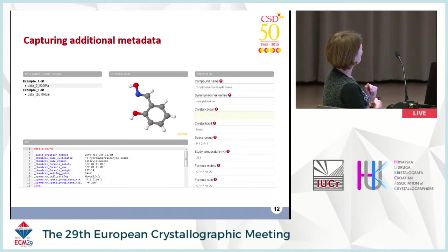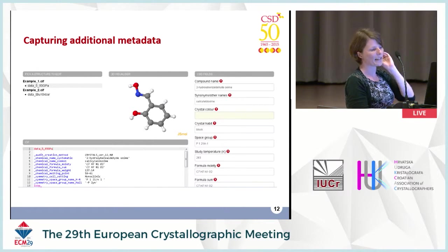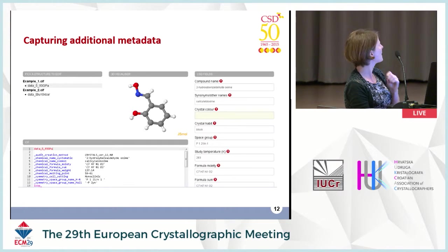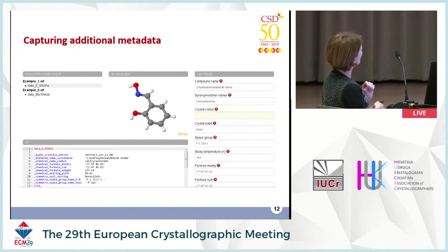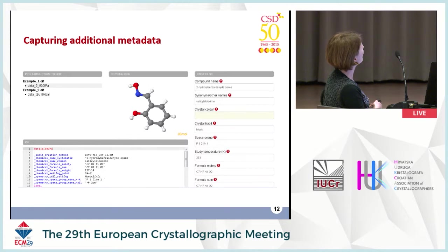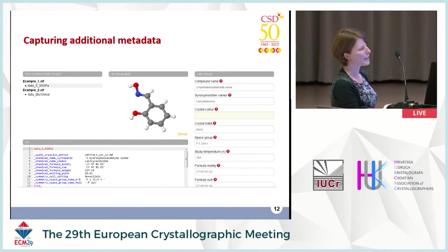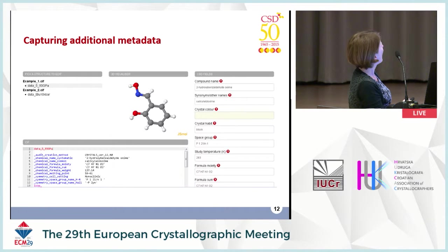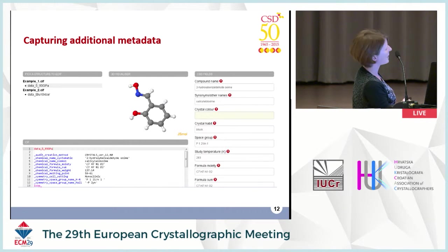During the deposition process we also highlight some key metadata used to create a CSD entry. Metadata is pulled out and extracted from the CIF — things like compound name, color, habit, and melting point — and the depositor is asked to review and enhance their data.